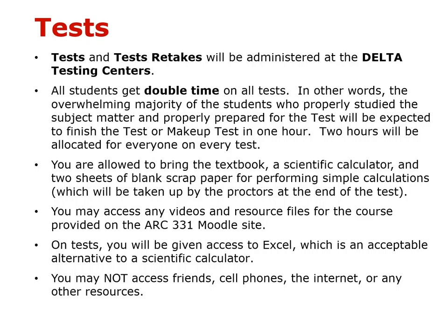Tests and retakes will be administered at the Delta testing centers. All students get double time on all tests — the overwhelming majority of properly prepared students will finish in one hour, but two hours are allocated for everyone. At the test, you are allowed to bring the textbook, a scientific calculator, and two sheets of blank scrap paper for performing simple calculations. That scrap paper will be taken up by the proctors at the end of the test.